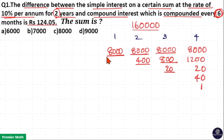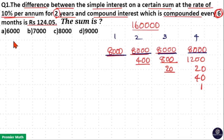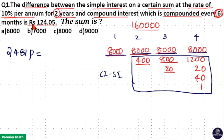Now you can see that 8,000 plus 8,000 plus 8,000 plus 8,000 equals the simple interest for 2 years, i.e., 20% of 1,60,000 equals 8,000 × 4, which is 32,000. So the remaining amount is the difference between CI and SI, which equals 1,200 plus 800 is 2,000, plus 2,400 plus 20 plus 20 plus 40 plus 1. That is 2,481 parts equal to the difference between CI and SI, which equals Rs. 124.05.